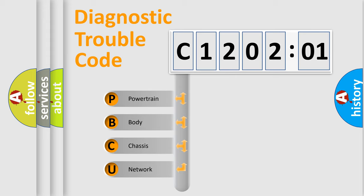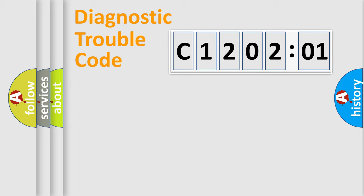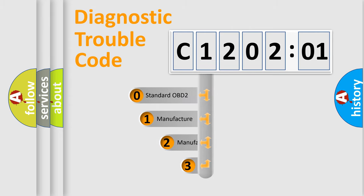We divide the electric system of automobile into four basic units: Powertrain, Body, Chassis, and Network. This distribution is defined in the first character code.